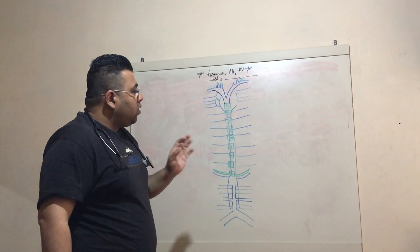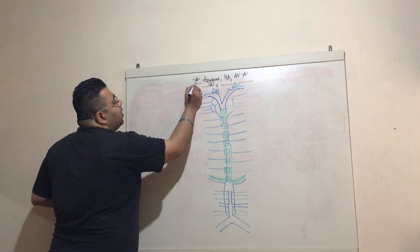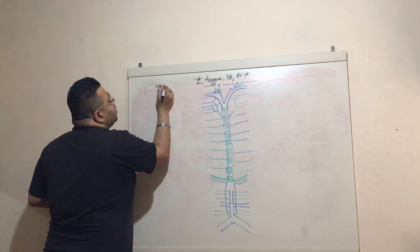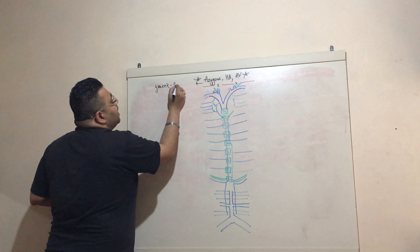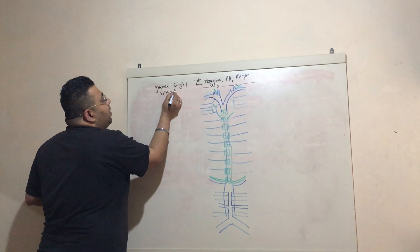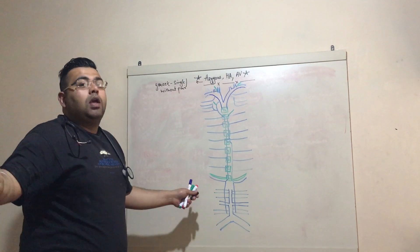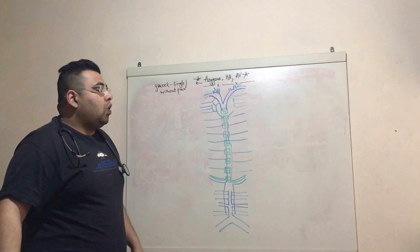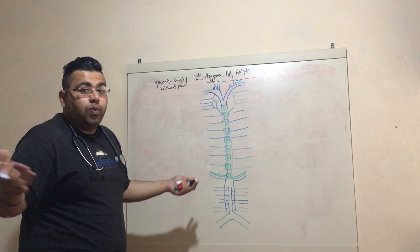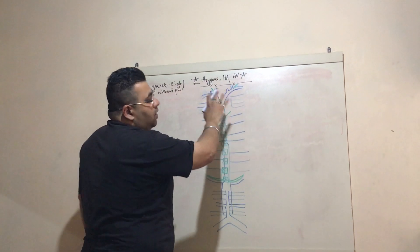The first question is: what do you understand by the word 'azygous'? If you look into the Greek meaning, it means 'single' or basically 'without pair'. So the azygous venous system is a single one with no partner.